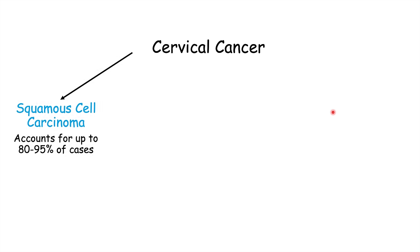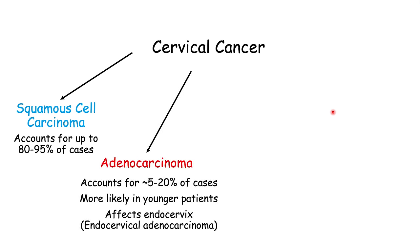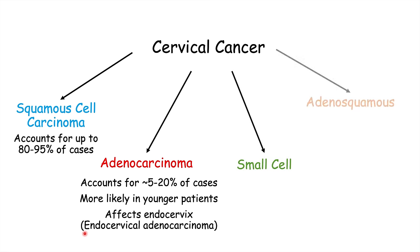There are several types of cervical cancer. The most common is squamous cell carcinoma, accounting for 80 to 95% of all cases, arising from squamous cells lining the ectocervix. The second most common is adenocarcinoma, accounting for approximately 5 to 20% of cases; it is more likely in younger patients and affects the endocervix — sometimes called endocervical adenocarcinoma. Two rarer types are small cell and adenosquamous carcinoma.